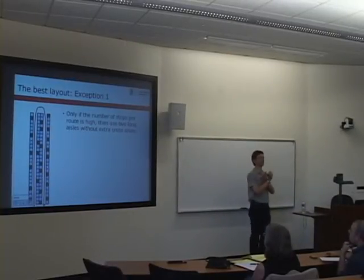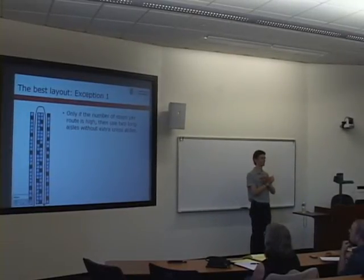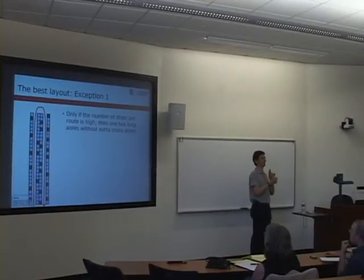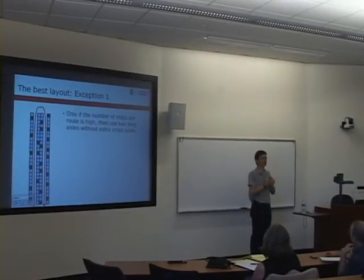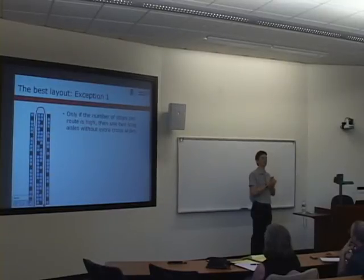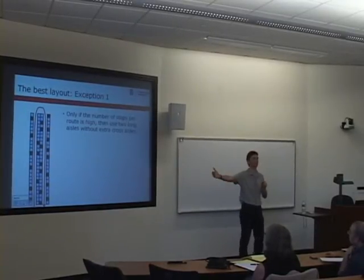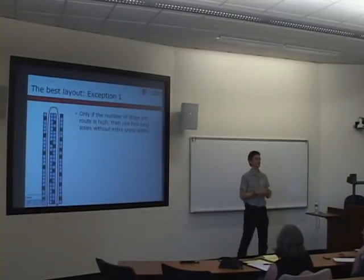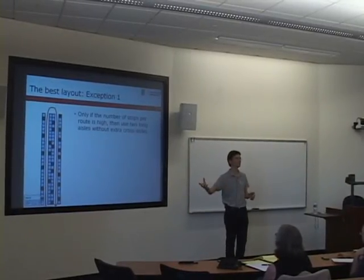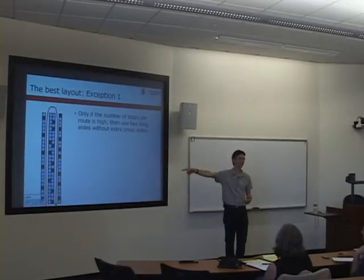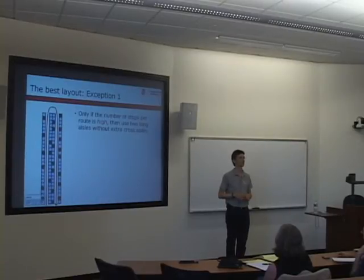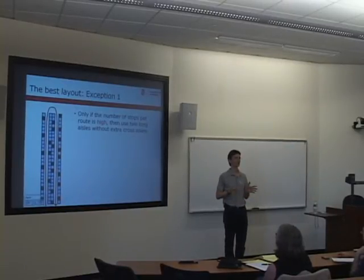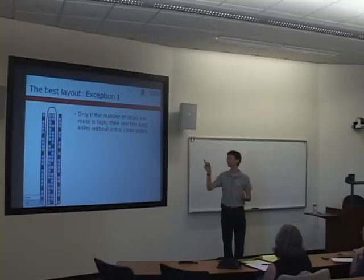Now, I said always have cross-aisles. There's two exceptions. The exception one is you have a lot of picks. You have to go everywhere. Well, if you have to go everywhere, you don't want extra cross-aisles because you have to go everywhere anyway. So, skip it. You don't want extra aisles because you have to go to almost every location. So extra aisles is just changing aisles as extra effort. So the best way is just to have one aisle up and one aisle down. There's no aisle changing, no cross-aisles. And that's shorter. It might be trouble to get this in your warehouse layout, overall layout, but it is shortest.